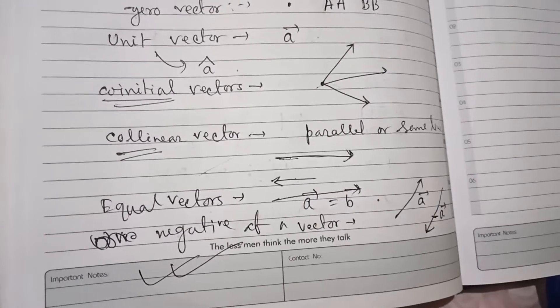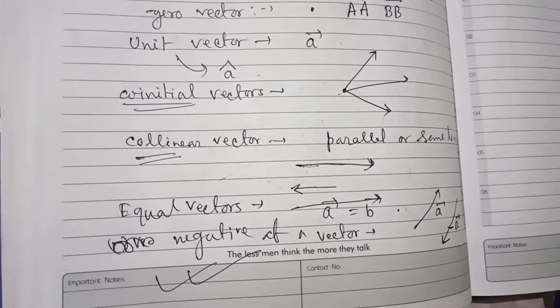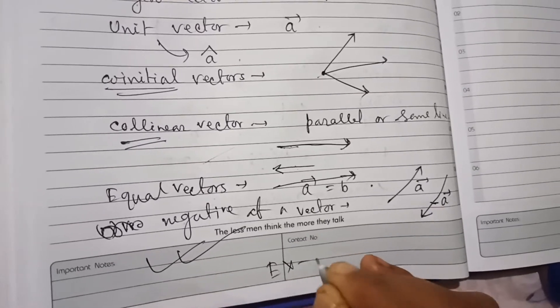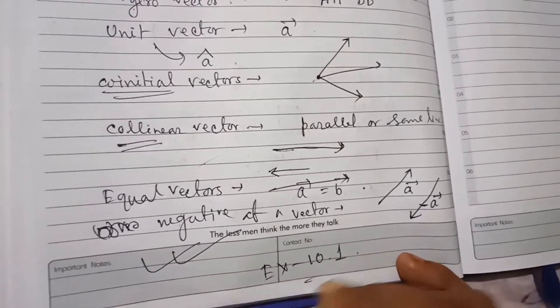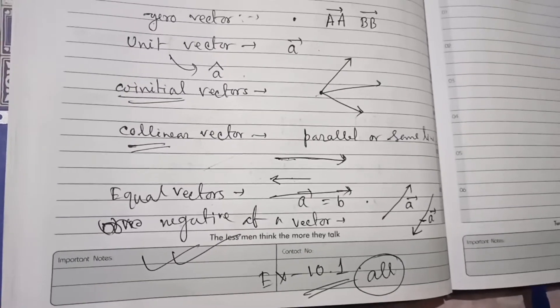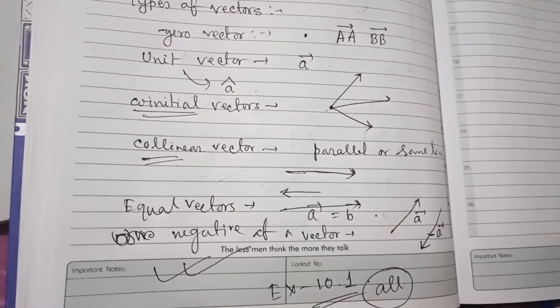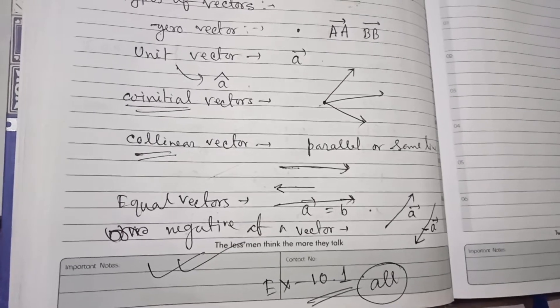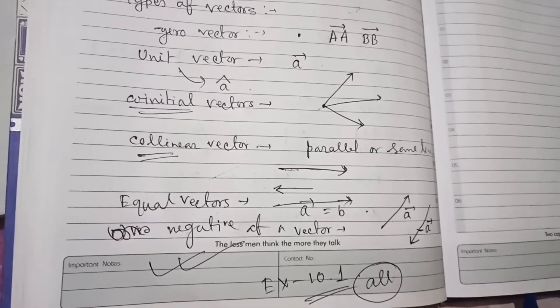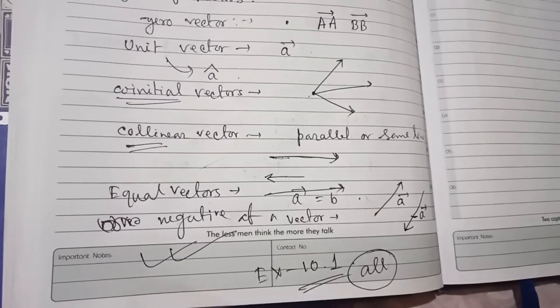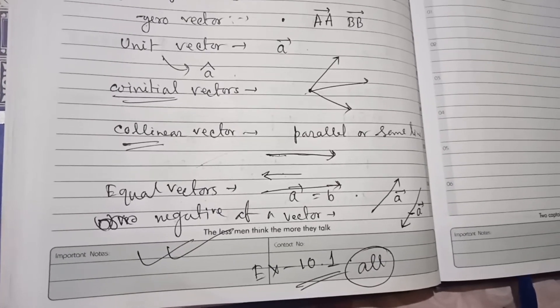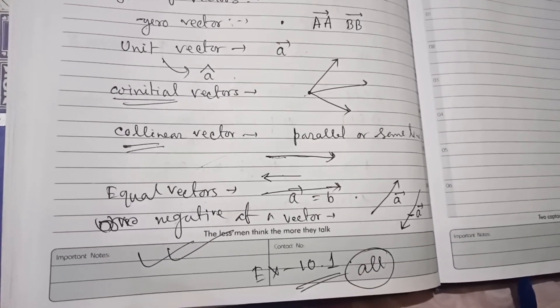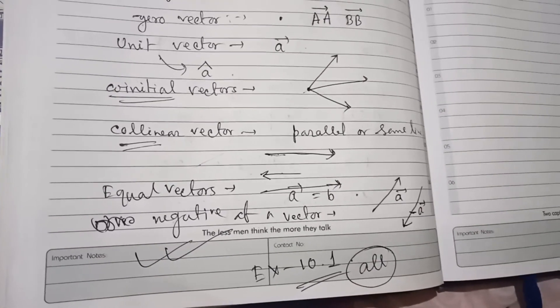That is all about today's session, students. I hope you understood it. Your homework is Exercise 10.1 — all questions from Exercise 10.1 of the NCERT Part 2 Mathematics book. We will meet in the next video with another topic on vector algebra and the 3D unit. Till then, thank you.